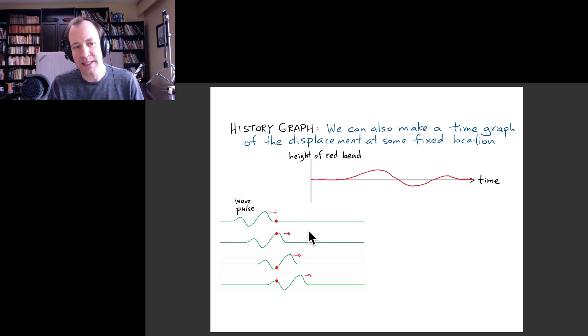Here's an example where I have that same wave as before, but now imagine there's a little red bead on one part of the string. Suppose that we want to keep track of not the entire wave, but just what that little red bead is doing.